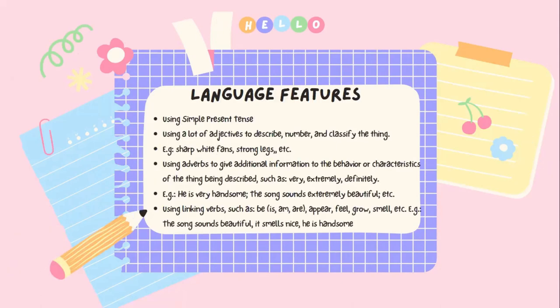Berikutnya yaitu language features atau ciri-ciri kebahasaan yang ada pada descriptive text. Pertama, using simple present tense. Kedua, using a lot of adjectives to describe, number, and classify the things — for example: sharp, wide, fence, or strong legs. Ini kata lainnya adalah adjective in order. Jadi dosaskom — kepanjangannya ada determiner, opinion, size, safe, color, material, and noun.